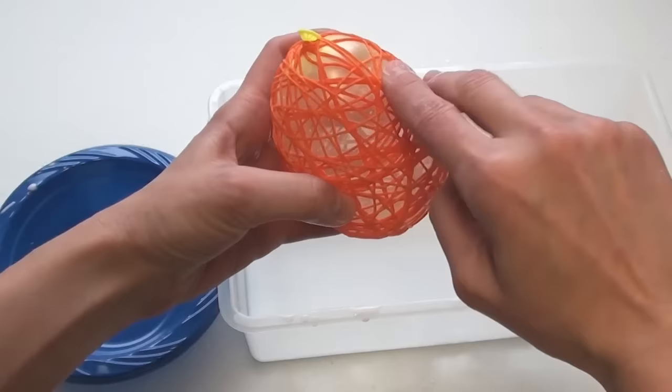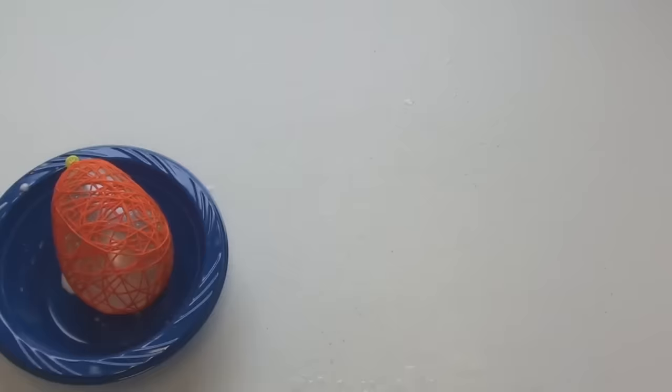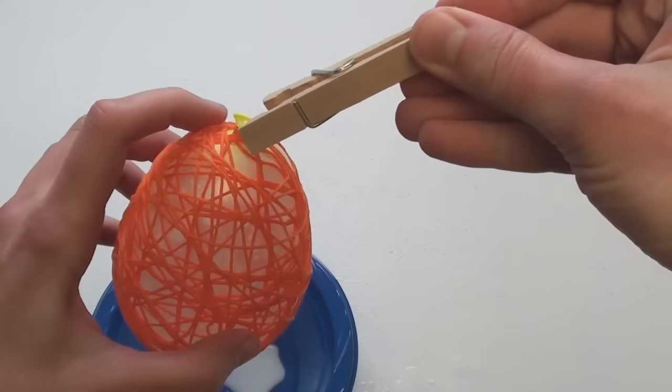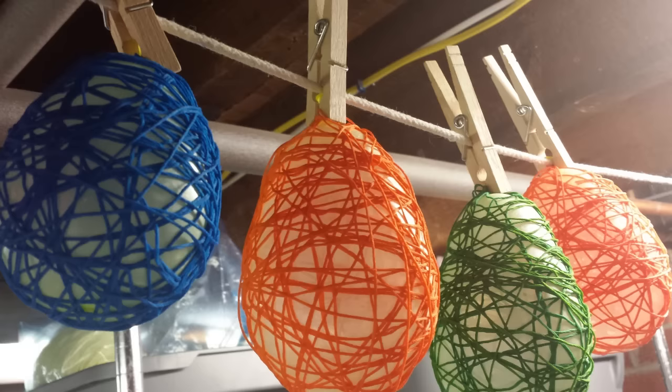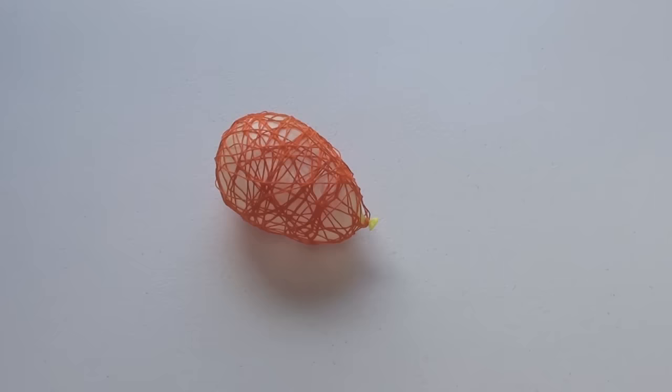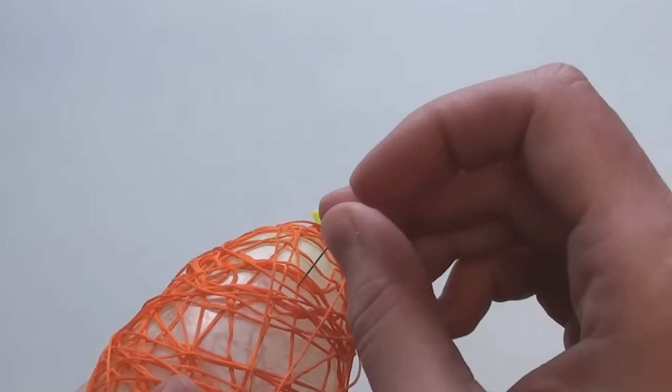These small balloons take about two embroidery floss skeins, while a nine inch balloon uses about six skeins of embroidery floss. What I like to do is grab an old clothespin and hook it to the knotted part of the balloon. These need to dry for a minimum of 24 hours. It is very important to let them dry fully before moving on to the next step.